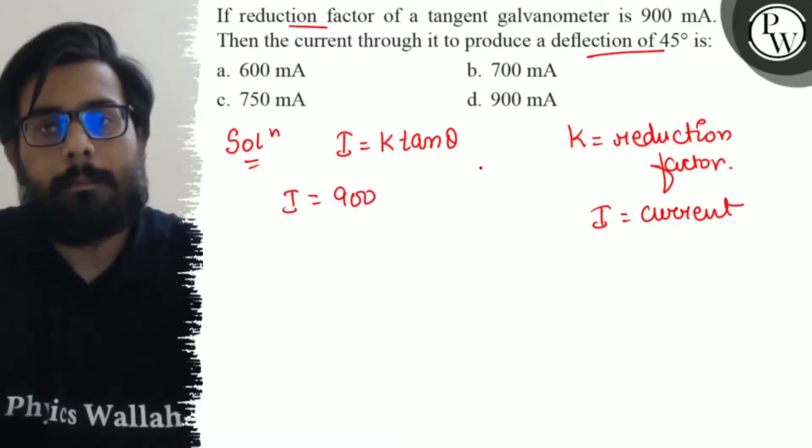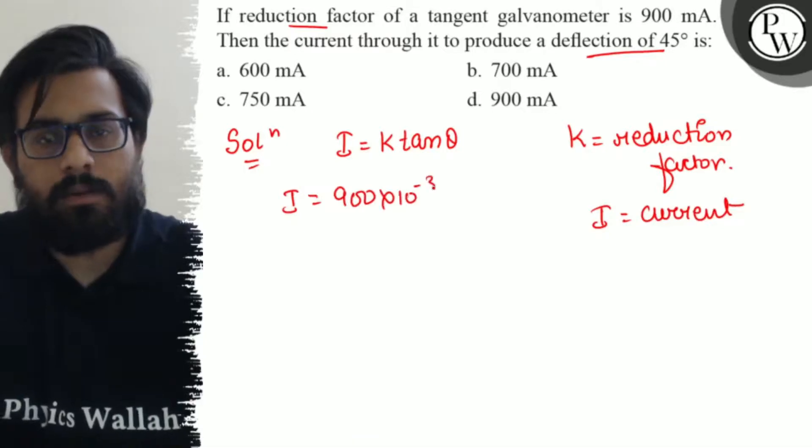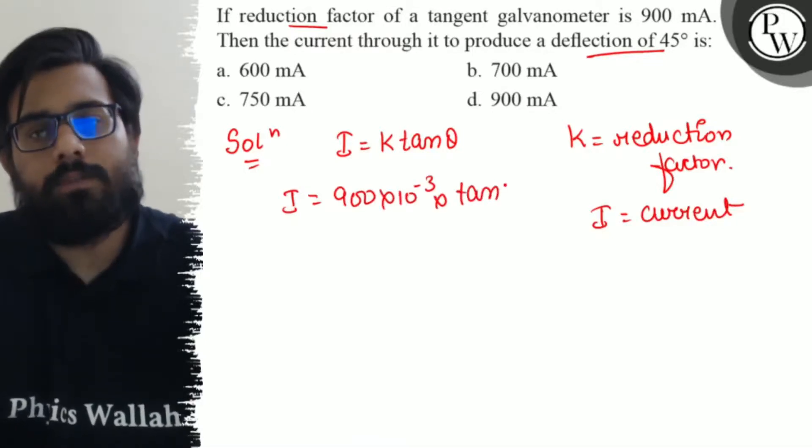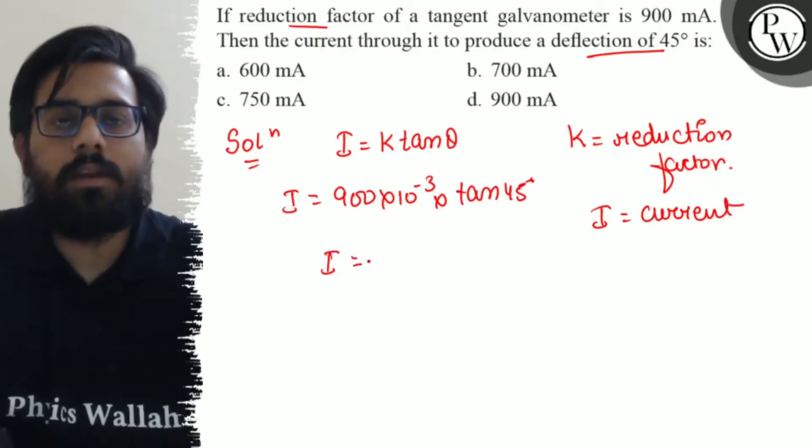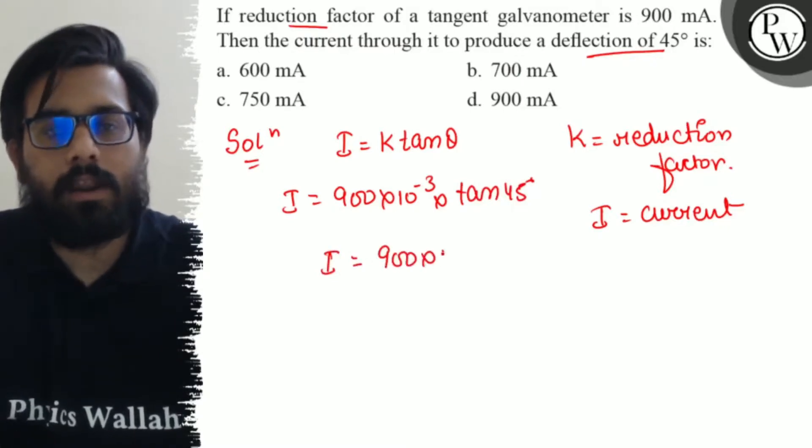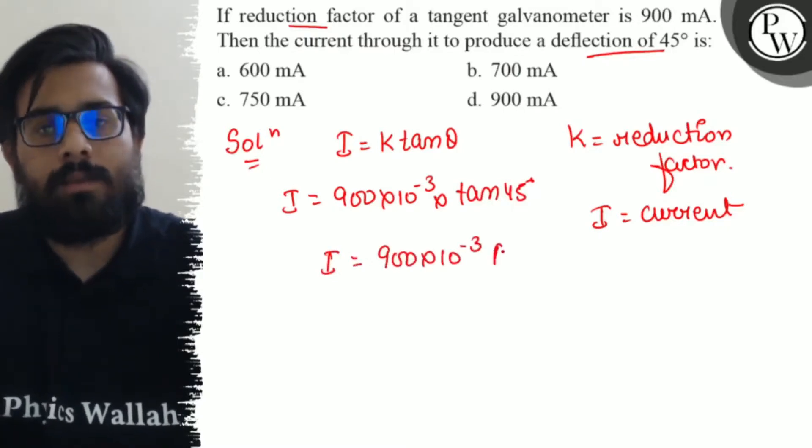So I is equal to 900 milliampere, so milli is 10 to the power minus 3, into tan of 45 degree. We know that tan 45 is 1, so the value of current comes out to be 900 into 10 to the power minus 3 ampere, or you can say it comes out with 900 milliampere.